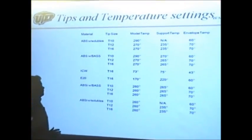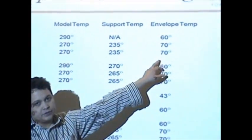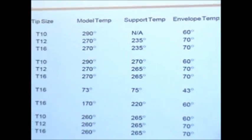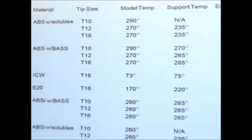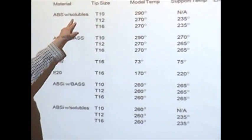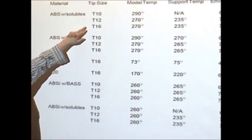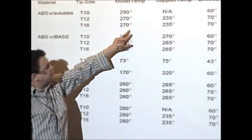Like I said before, you have different tips. You have the model temperature, the support temperature, and the envelope temperature. And those change for all the different tips, as you can see in this presentation. If you use ABS with soluble support, you can use a tip 10, tip 12, or tip 16, and right now we'll get into more of a little bit of tips. But then you also have to reset the temperature.